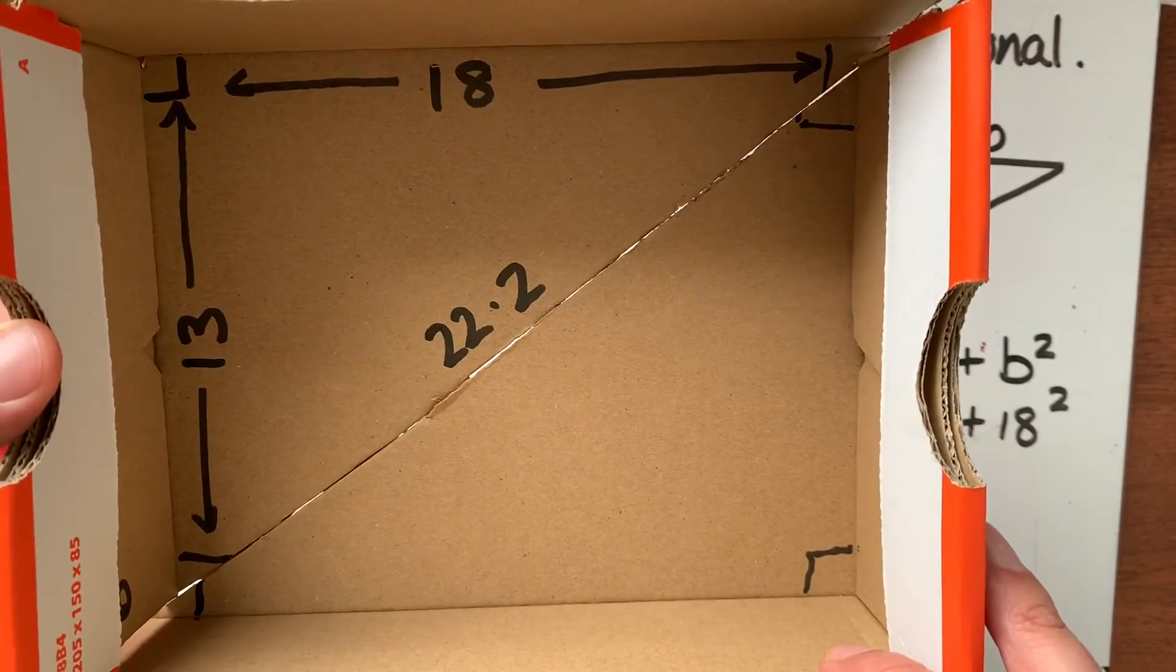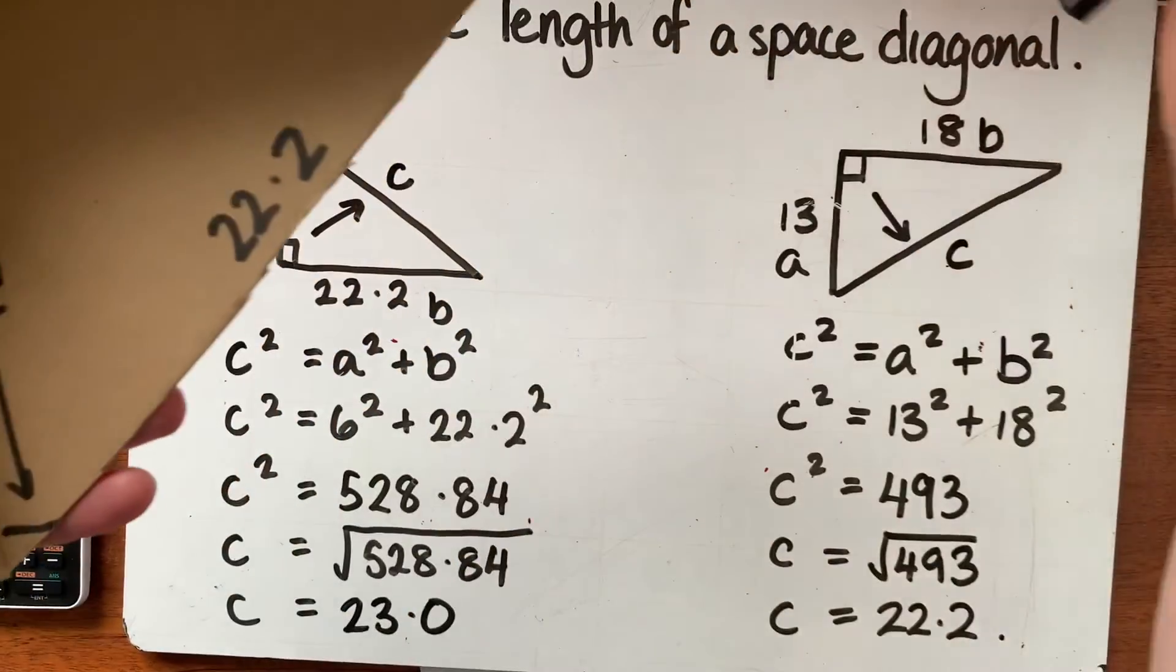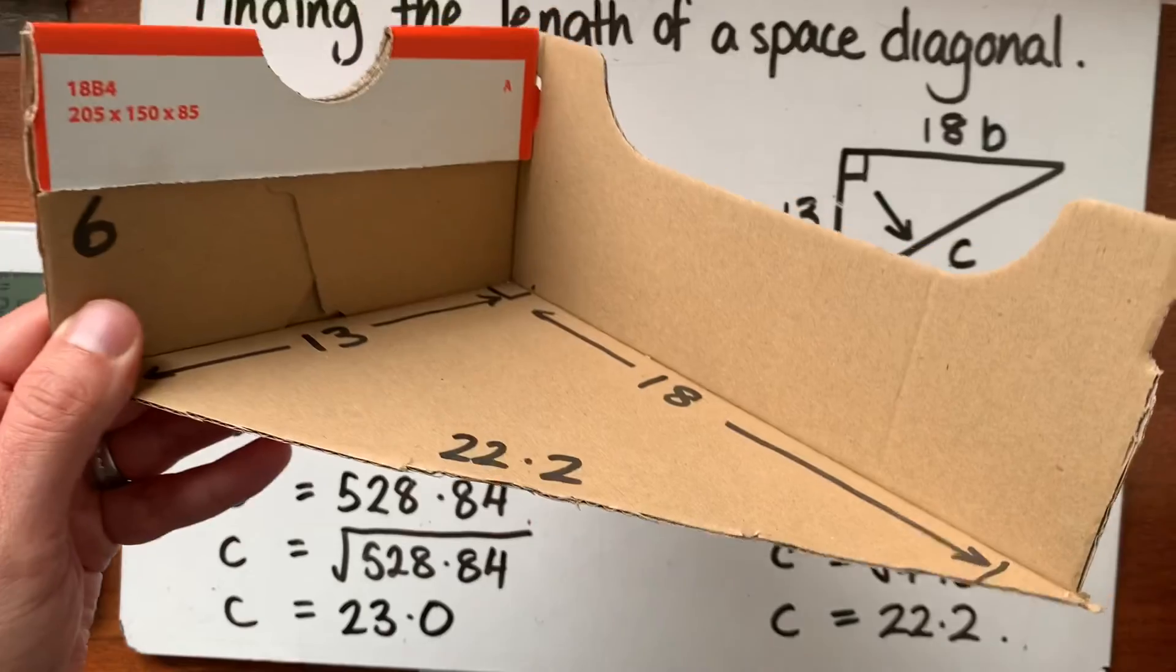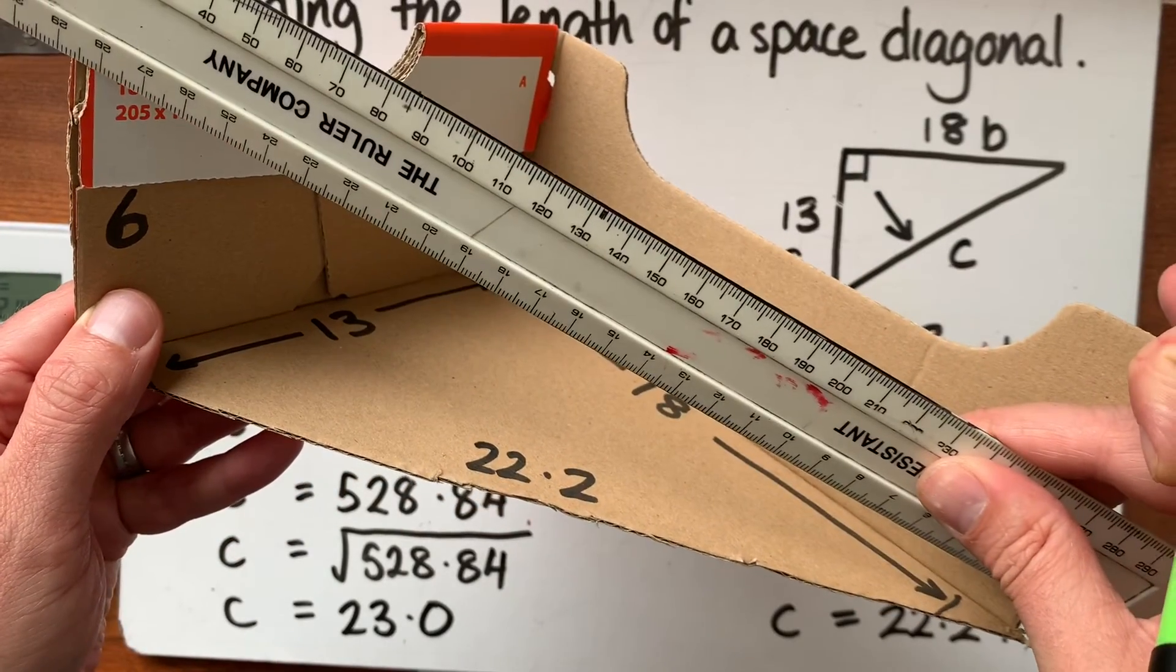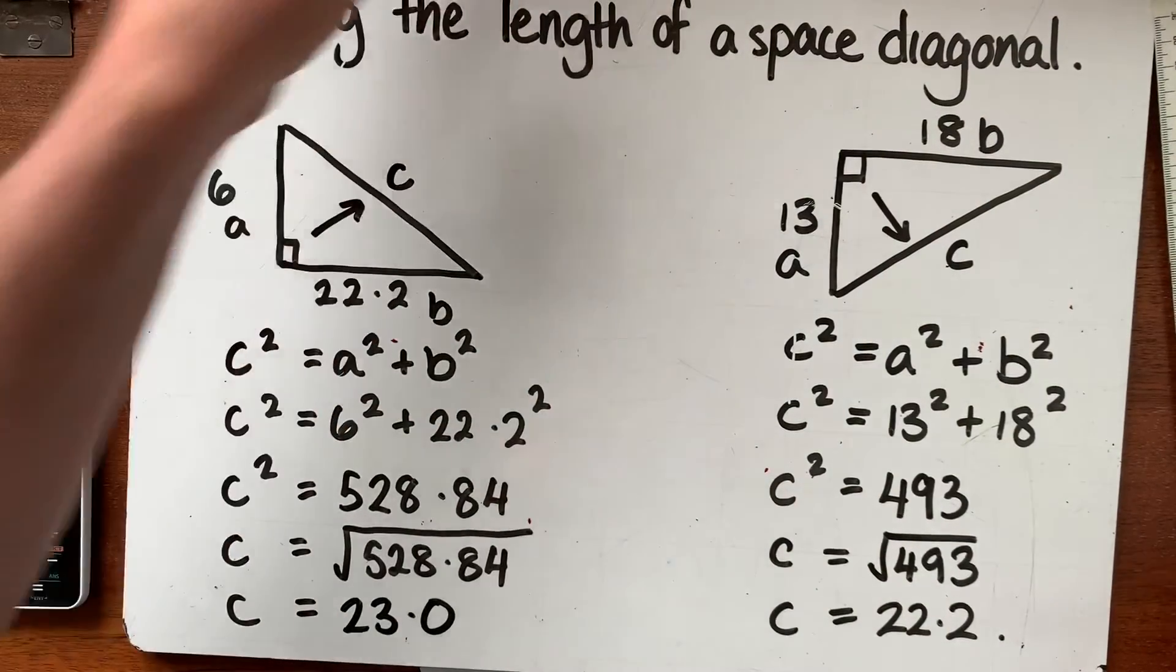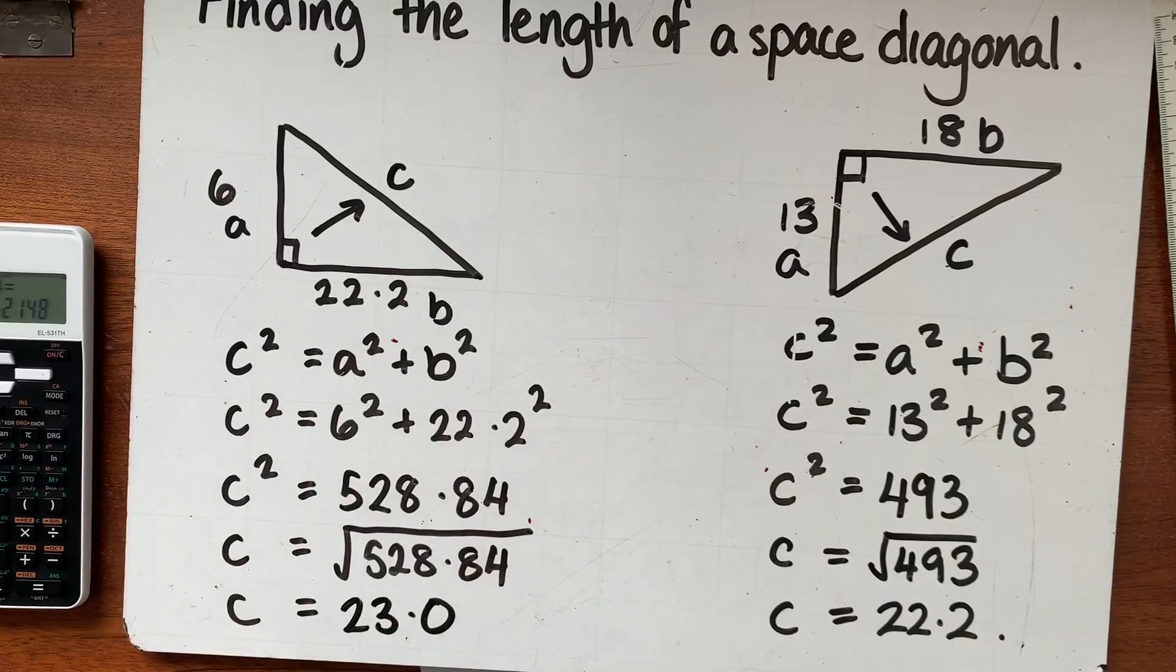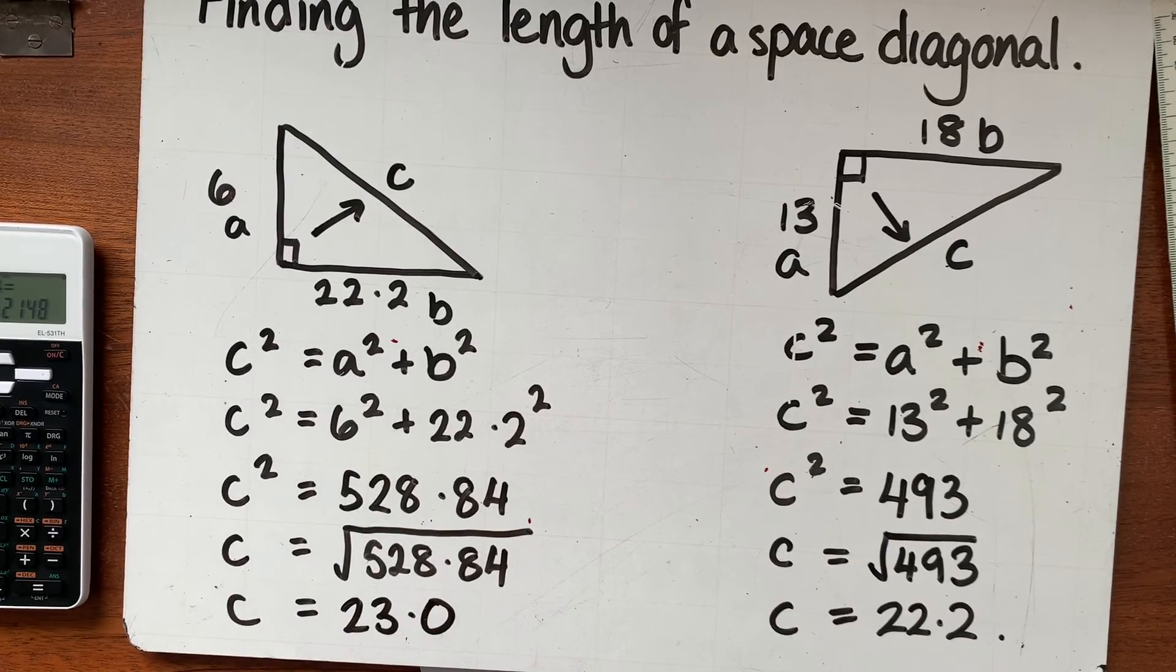So we've got double Pythagoras going on there. We started with our complete cuboid and finding the face diagonal of the base, at which point once we knew that we were making this new triangle with the height and that face diagonal to form another right angle triangle and doing a second lot of Pythagoras and finding that space diagonal. Hopefully that's helpful and helped you get a better visual perspective of what's going on when you find the length of a space diagonal.